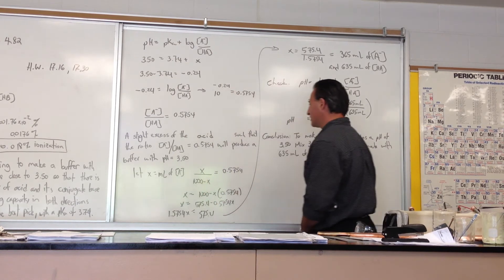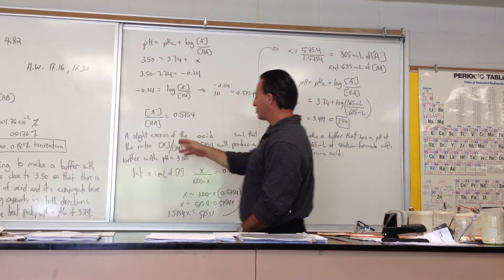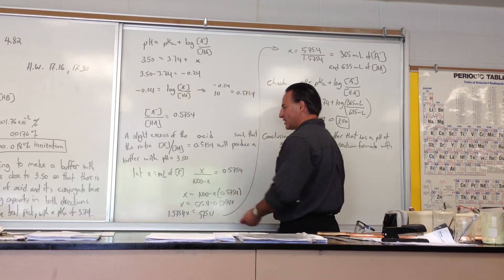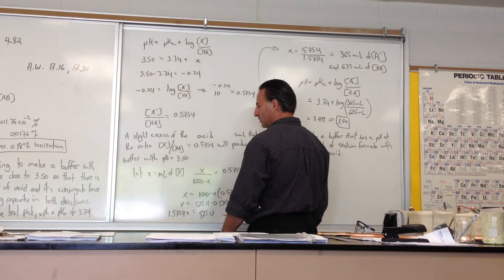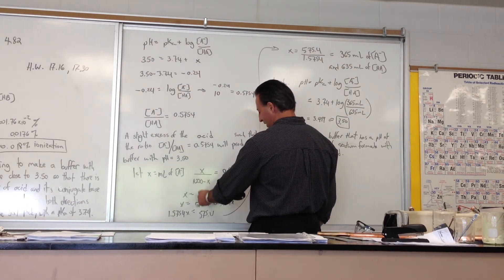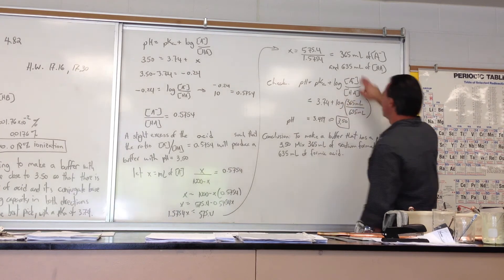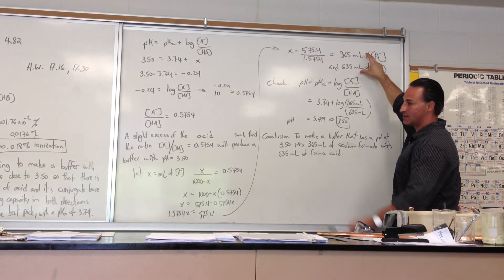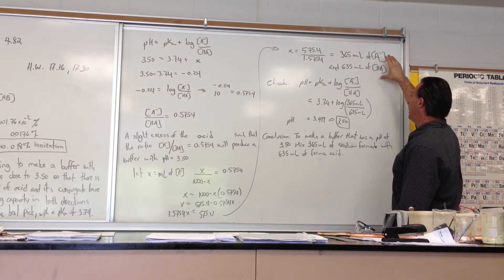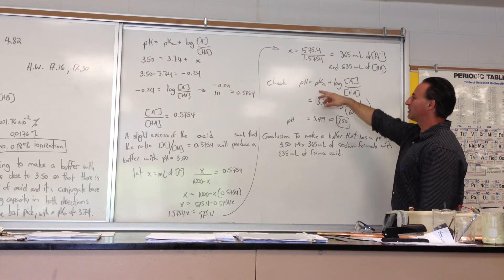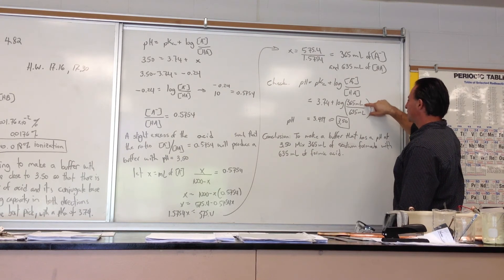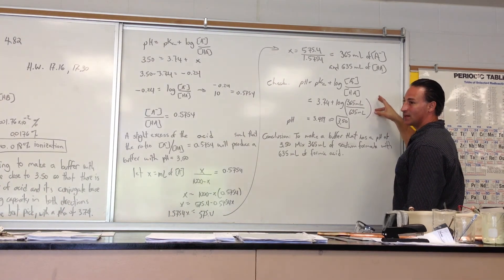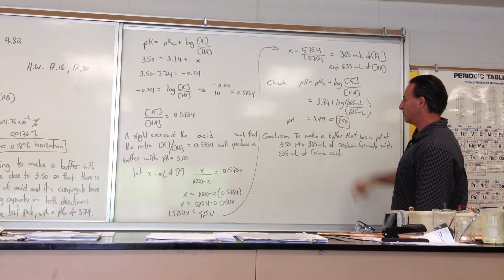That means that the proportion of conjugate base to acid is 0.57. So a slight excess of the acid is necessary such that the ratio A minus over HA is equal to 0.574, and will produce a buffer with a pH of 3.5. So to find out what that proportion is, I said let X equal the milliliters of A minus solution of the conjugate base containing solution. I did the algebra, solved for X, and found out that it takes 365 milliliters of the conjugate base and 635 milliliters of the acid totaling 1 liter because it specifies in the problem that we have to make a 1 liter solution. And just to double-check the results, I plugged it back into the Henderson-Hasselbalch equation. You'll notice I simply put in the values of milliliters. Why? Because they're both multiplied by the same concentration, so that's going to cancel anyway. And it turns out that it gives you a buffer of pH 3.5.